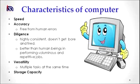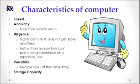Now coming to the characteristics of a computer. Computer has speed — whatever we do in hours, months, and years, a computer can do it in seconds. It has accuracy because a computer is free from human error. We can get fatigued and tired, but not our computer system. It has diligence, meaning it is highly consistent as a machine — it does not get bored or tired due to repeated tasks and is better than human beings at performing voluminous and repetitive jobs. Computer has versatility — it can perform multiple tasks at the same time. And it also has storage capacity, meaning it can store different kinds of data.